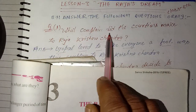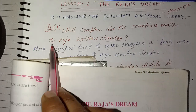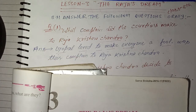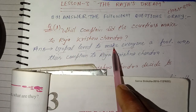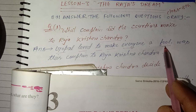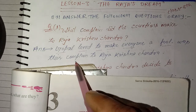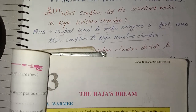First question: What complaint did the courtiers make to Raja Krishna Chandra? The answer is: Gopal loved to make everyone a fool. This was the complaint the courtiers made in Raja Krishna's court.